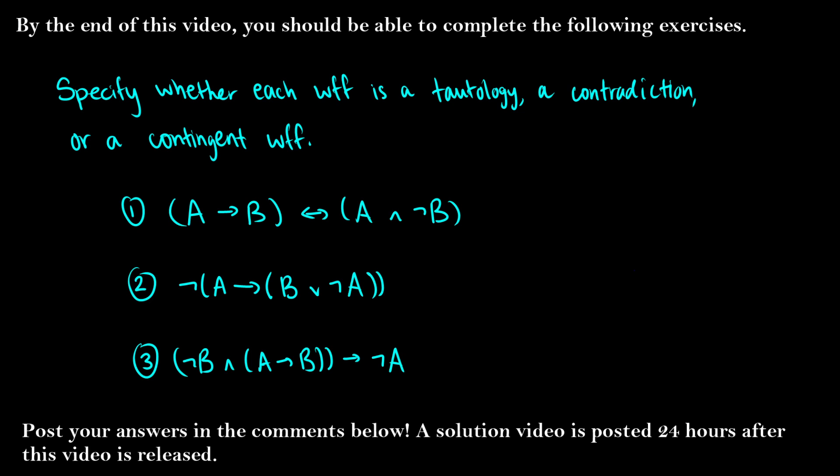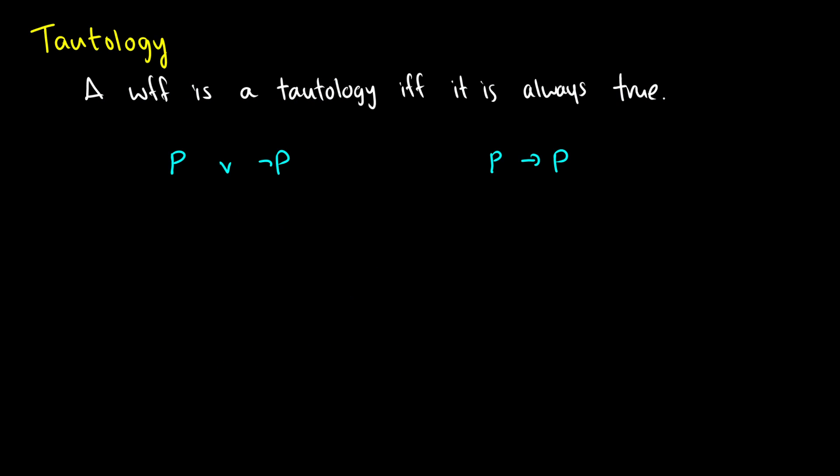In this video, we're going to introduce tautologies, contradictions, and contingent well-formed formulas. By the end of this video, you should be able to answer the following three questions and state whether or not each of these is a tautology, a contradiction, or a contingent well-formed formula. So let's get into it.